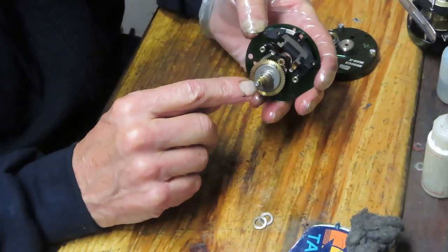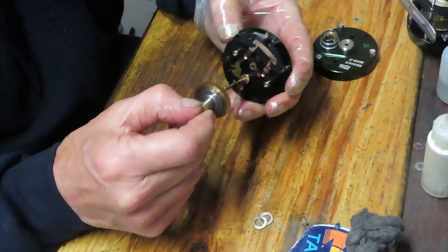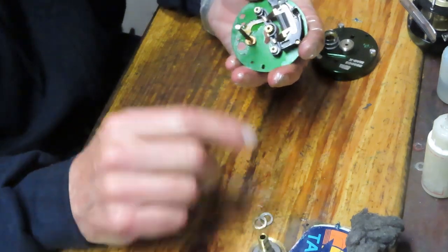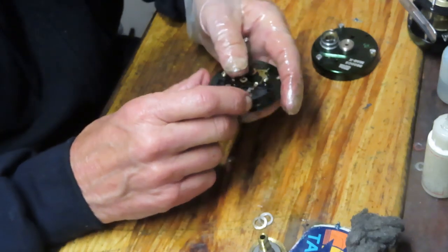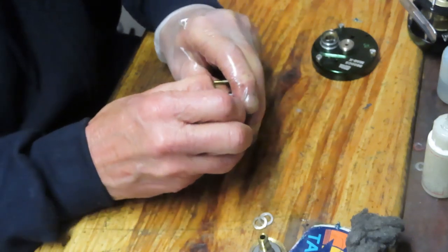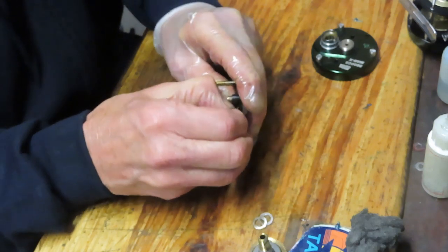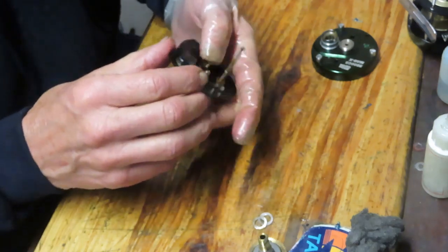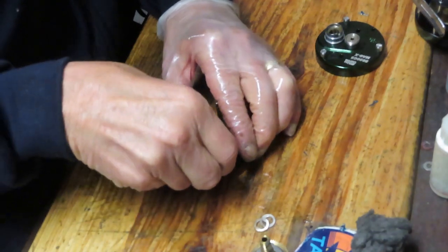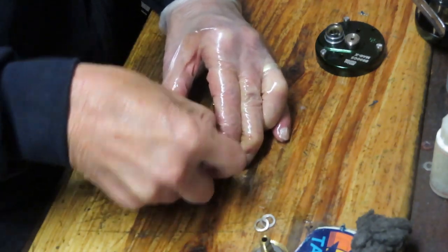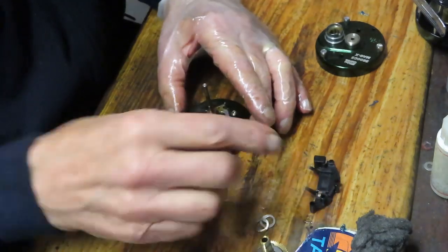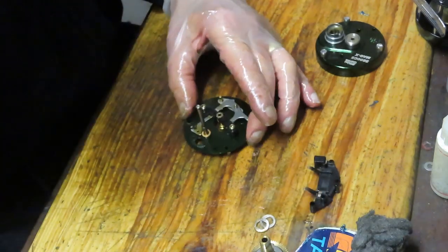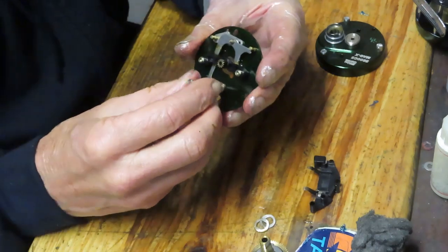We're going to start, since we've taken that E-clip off, by removing this whole post. There is a little brass washer on the bottom of this seat here. Don't lose it. Be aware that it is there. And then we should be able to pull up on this spring tensioner. It won't take much. Set that to the side. We're going to leave these parts right on the table. This is about cleaning and then replacing.